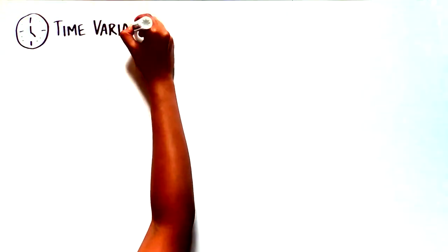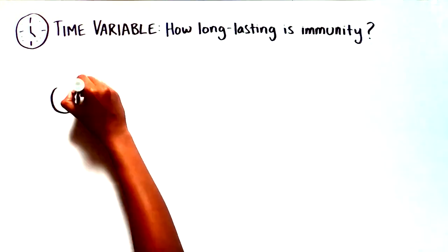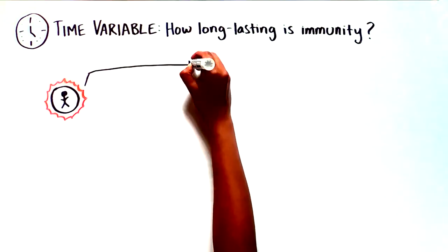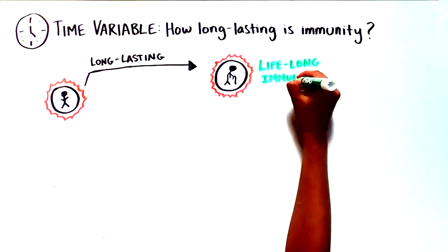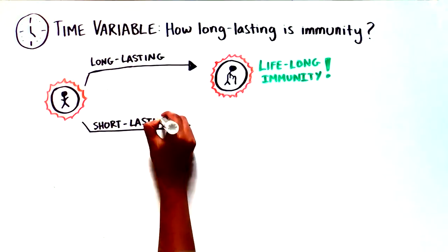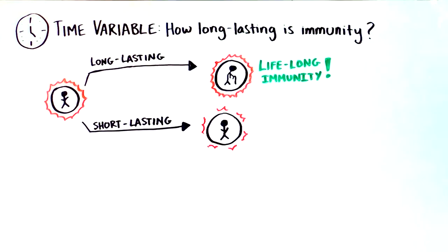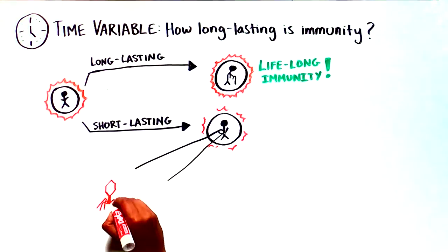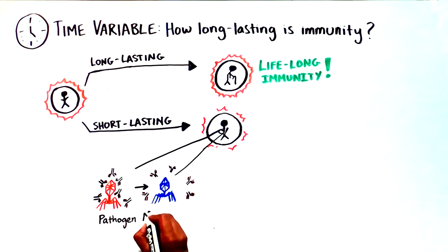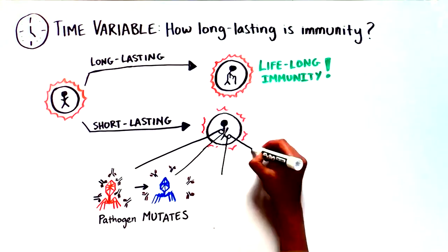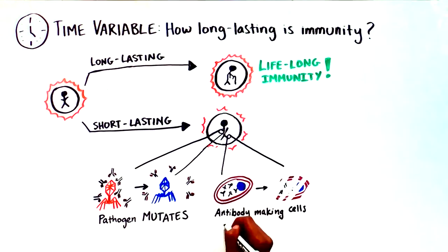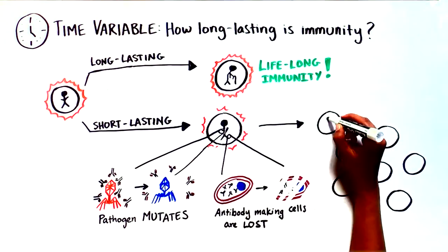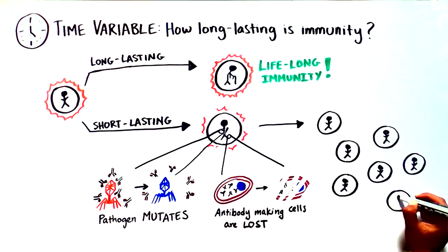Another important variable is time. Although immunity to some pathogens is long-lasting and, in some cases, lifelong, immunity to other pathogens can wane over time — either because the pathogen mutates to avoid the antibodies, or because the cells that make protective antibodies are lost.